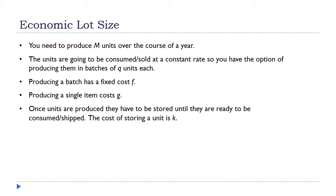Here are the assumptions. First, you need to produce m units over the course of the year — that's your total yearly supply. The marketing department will project this based on sales. Units are consumed or sold at a constant rate. You have the option of producing them in batches; we let q be the batch size. Producing a batch has a fixed cost f, producing a single item costs g — both are dollar amounts. Once units are produced, they must be stored until consumed, and the cost of storing a unit is k dollars.